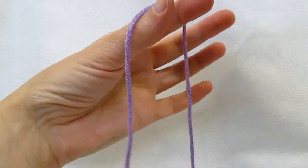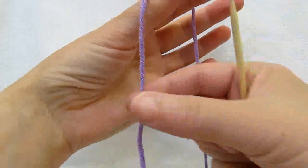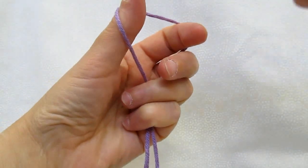You put your yarn over your thumb and forefinger with the tail of the yarn on the one on your thumb side.